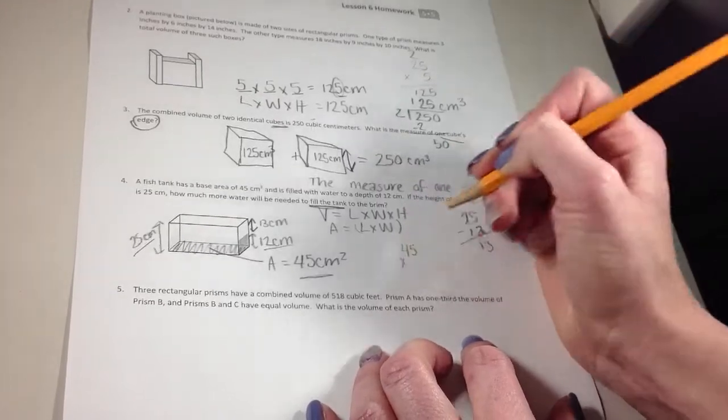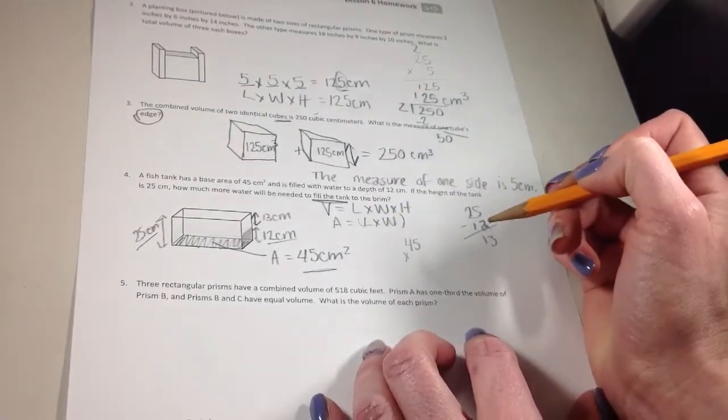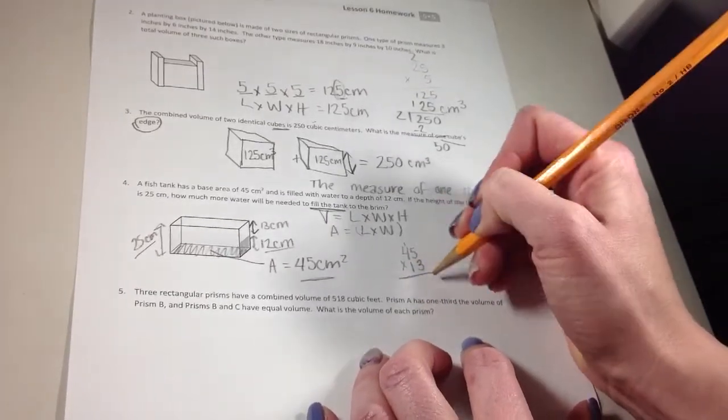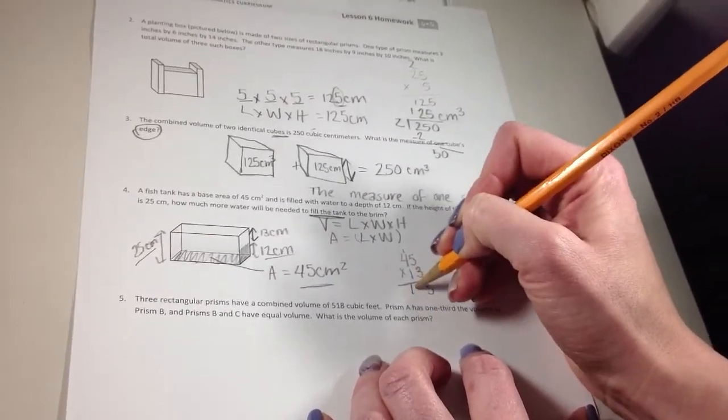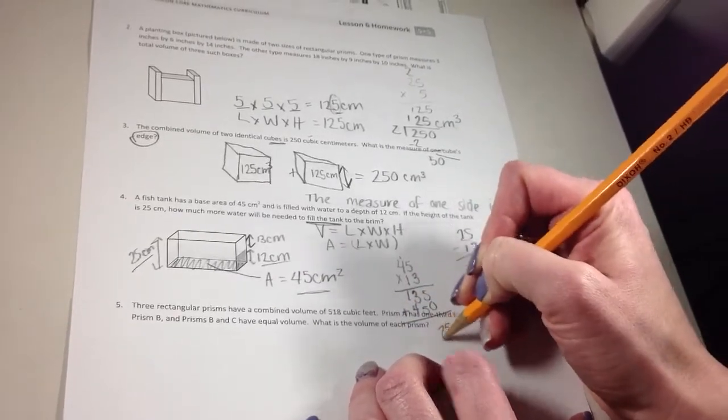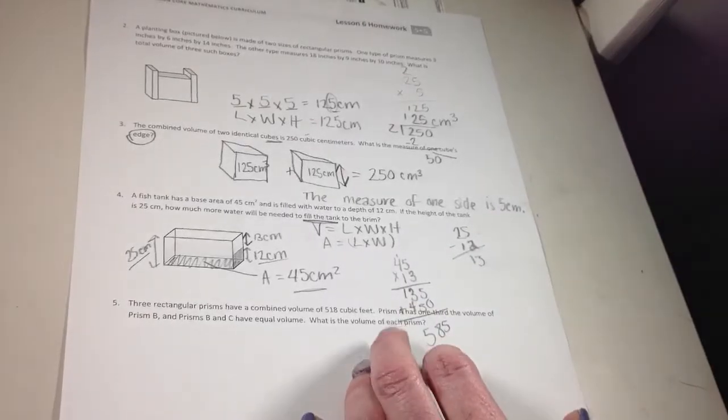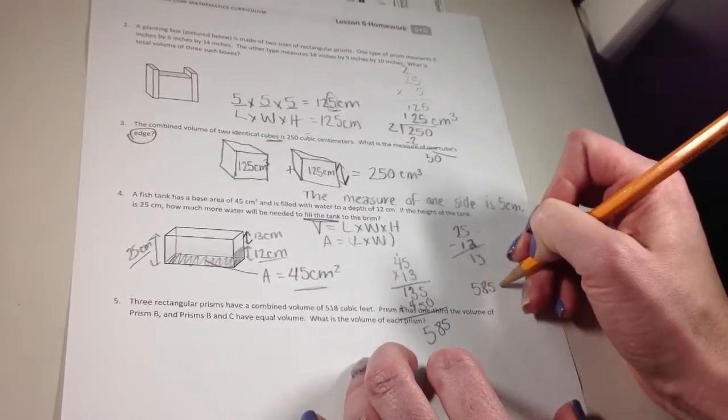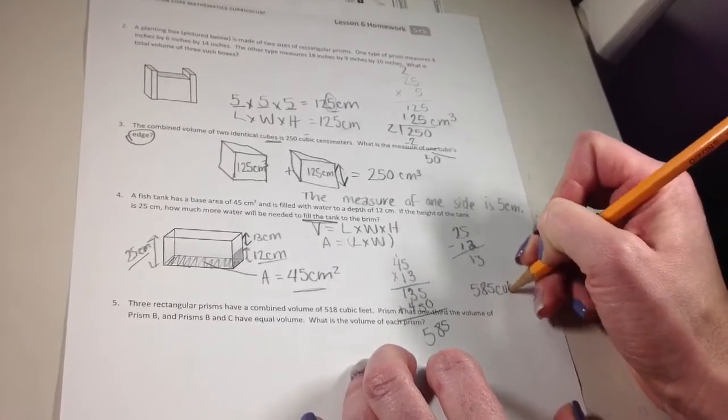So 45, which is again my length times width step, already done for me, times 13. And if I add it together, I get 585.